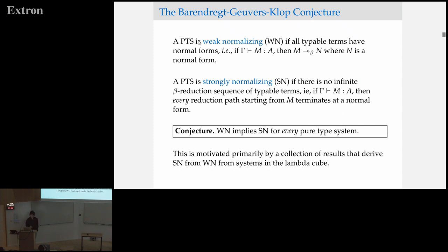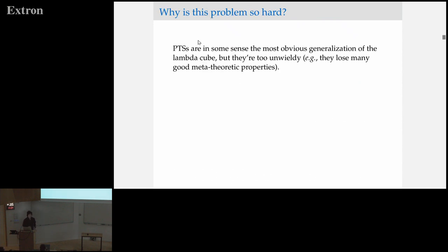My understanding is that this conjecture is motivated by a collection of works coming out around the same time it was conjectured, in which people were deriving weak normalization from strong normalization for systems in the Lambda cube. There hasn't been very much progress on this problem for quite a bit of time, so it's natural to ask why is this question so hard. Pure type systems, in some sense, are the most obvious generalization of the Lambda cube, but in reality they're a little bit too unwieldy. We have too much freedom in the definition, and they tend to lose good metatheoretic properties — for example, you lose type unicity very quickly if you have sorts that can be sorted in multiple ways.